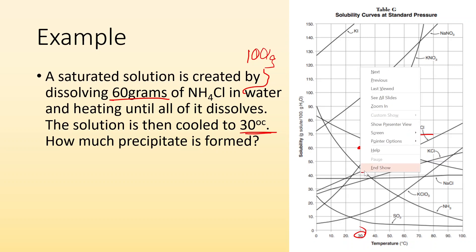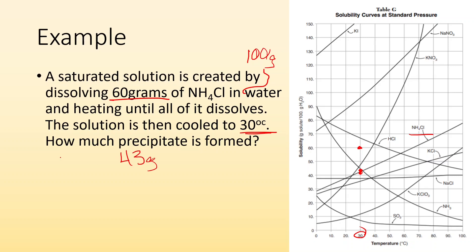So NH4Cl at 30 degrees should only be able to dissolve, I don't know, that looks like maybe 43 grams, but we had 60 grams in there. So how much precipitated out? Well, 60 grams minus 43 gives me 17 grams. So 17 grams of that salt will have precipitated out and is sitting at the bottom as a solid.